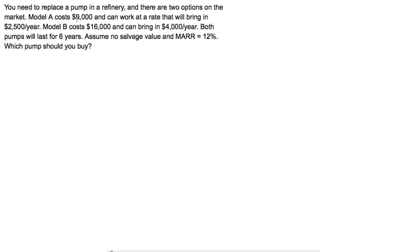Model A is going to cost $9,000 and bring in $2,500 per year. Model B costs more — $16,000 — and brings in more money: $4,000 per year. Both pumps last six years, which is important because they have the same life cycle. We'll do an example in the next video where they don't have the same life cycle. There's no salvage value, and the minimum acceptable rate of return is 12%.